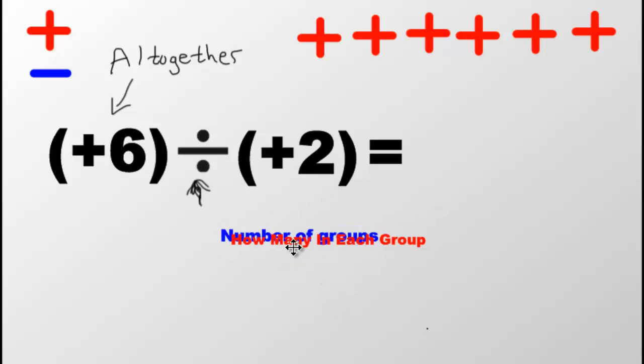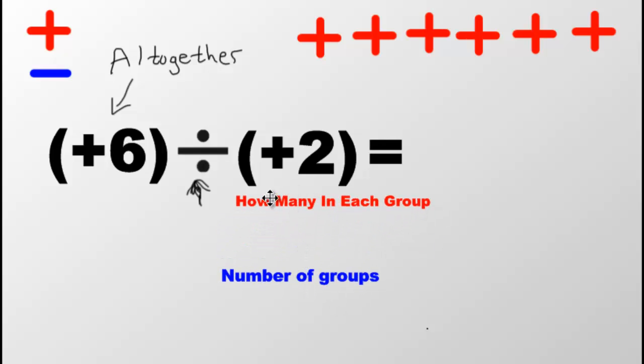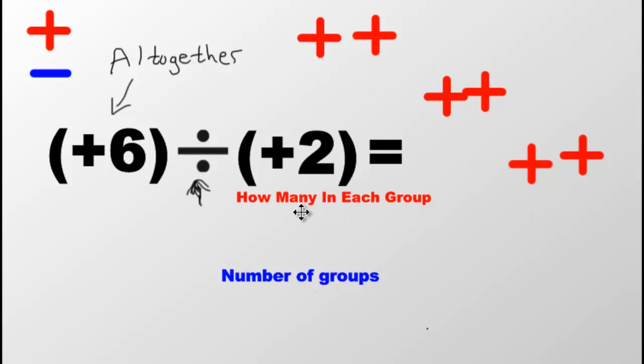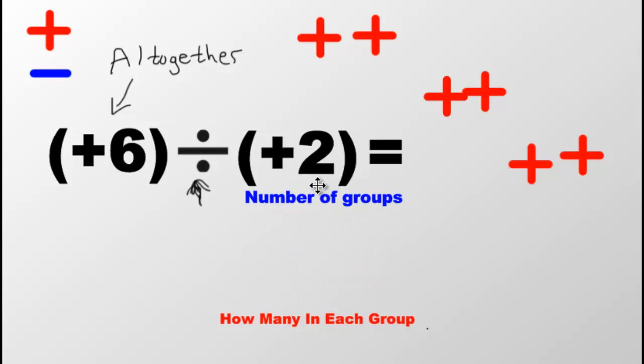Or you can decide to use this one and say I want to put two inside of each group. So this is what it would look like if I used this strategy, the one in the red, because I have put two inside of each group. If I was to use this one, I would say I would need the number of groups to be two. Here's two groups.